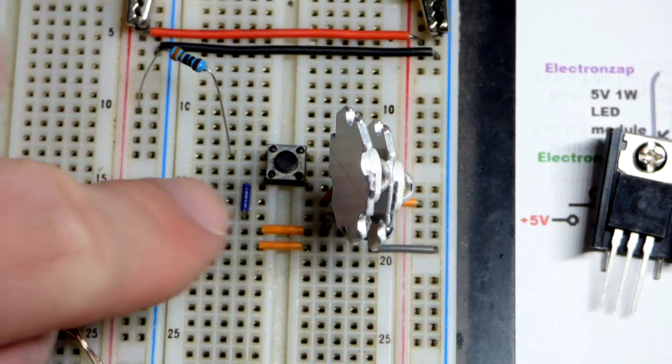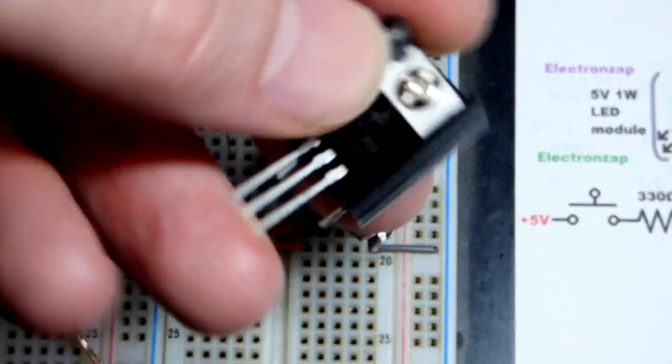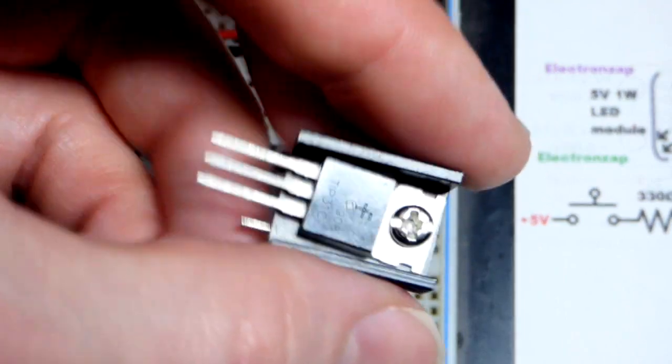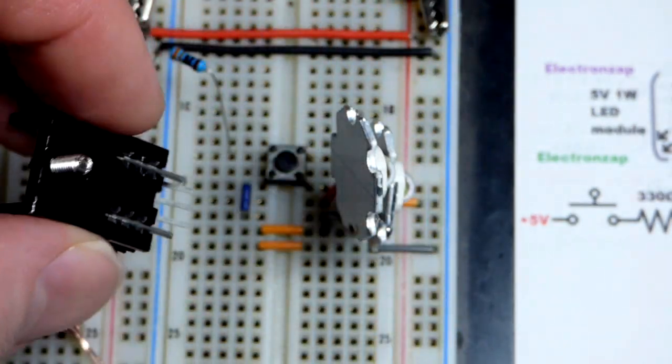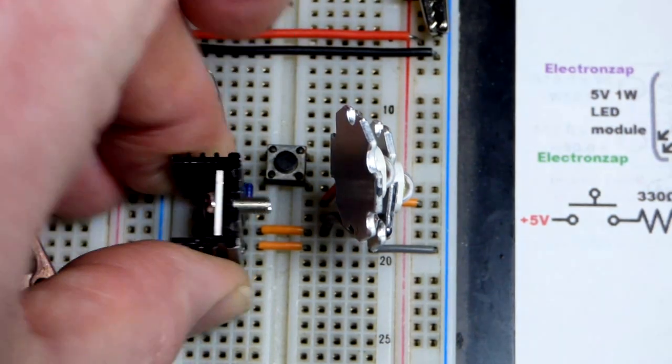So we have those. So again, base is going to be collector there and the emitter down there. Base is the left pin if we turn it that way. Now it's the top pin, pretty simple. It's facing to the left and we can just plug it into the board right there.